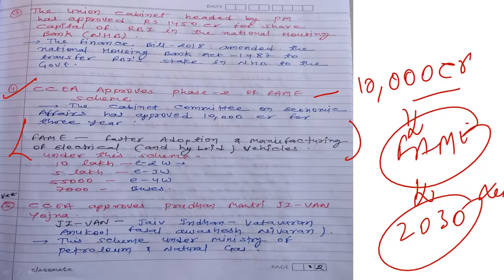Under FAME Phase 2, targets include 10 lakh two-wheeler electric vehicles, 5 lakh three-wheelers, 55,000 four-wheelers, and 7,000 electric buses. You will increasingly see states procuring electric buses for public transport. Phase 2 has already started.